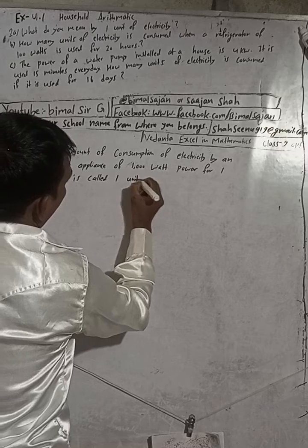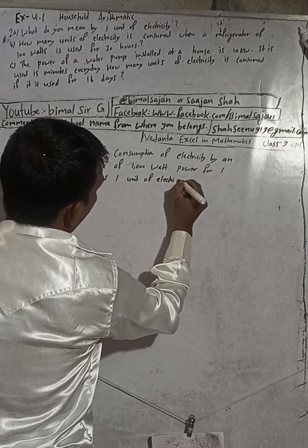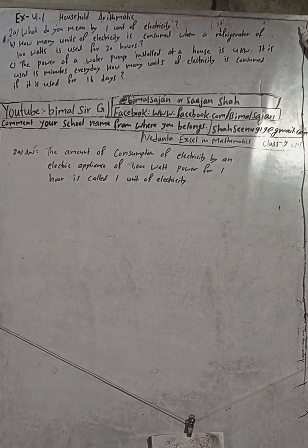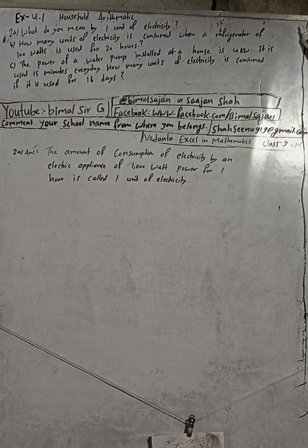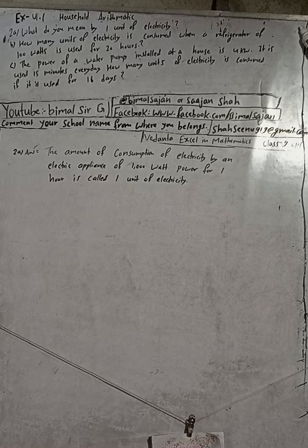So this is a short question. The amount of consumption of electricity by an electric appliance of one thousand watt power for one hour is called one unit of electricity.